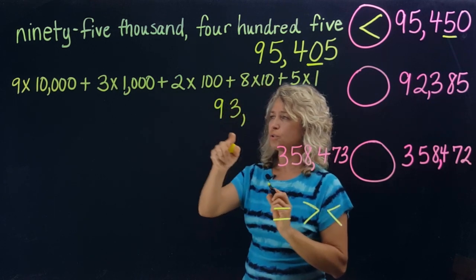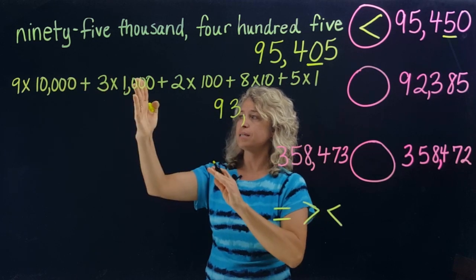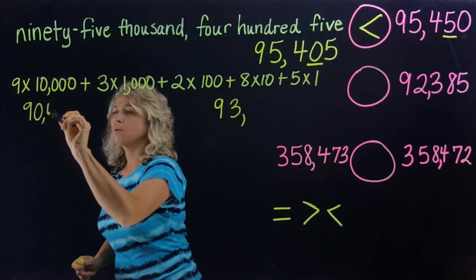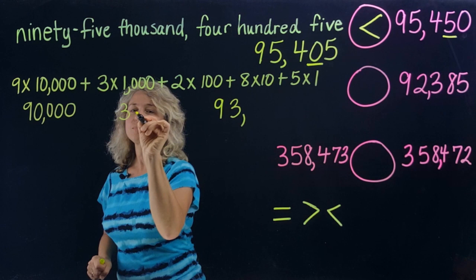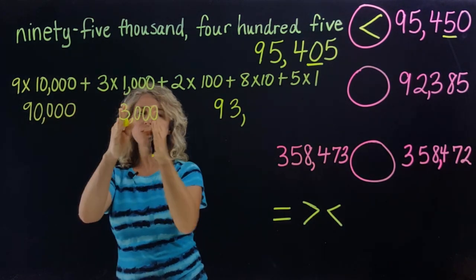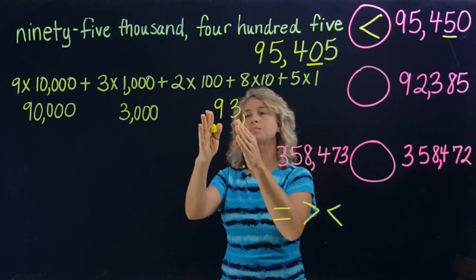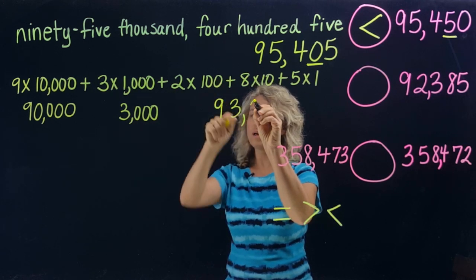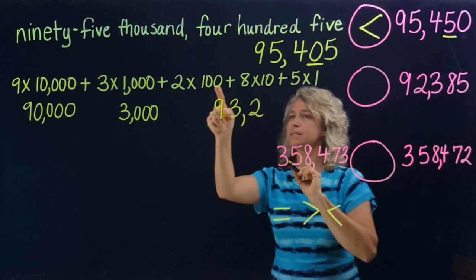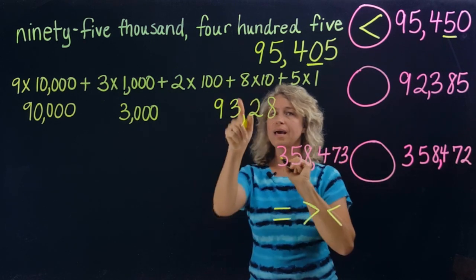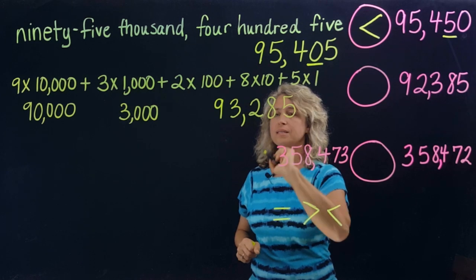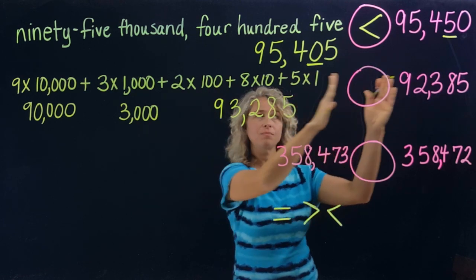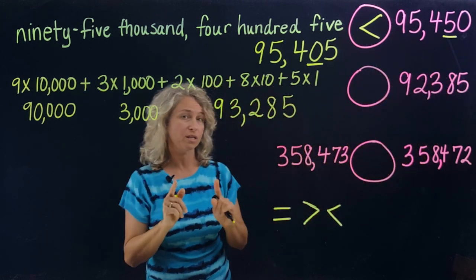Now because I just said thousand, let me put my comma here. So far what I have is ninety-three thousand — that's what I'm looking for. Let's continue: two times one hundred puts a two in the hundreds place, eight in the tens place, and five in the ones place. Now here is our standard form number, which can be compared to this number.